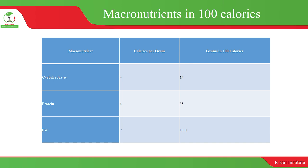How about the grams in 100 calories? Because we have 4 calories in 1 gram of carbohydrates, in 100 calories we have 25 grams. For protein, likewise, it will be 25 grams in 100 calories. And for fats, it will be 11.11 grams in 100 calories.